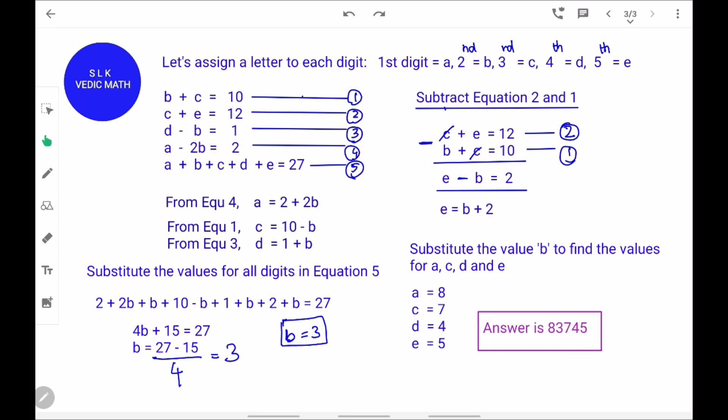Now, let's verify our answer. The first equation says second digit plus third digit should equal 10. So, 3 plus 7 equals 10. Next, it says C plus E equals 12. So, 7 plus 5 equals 12.